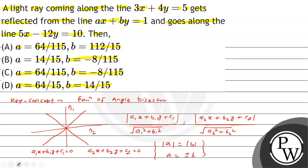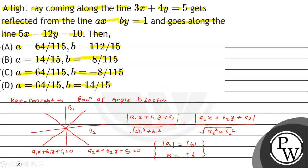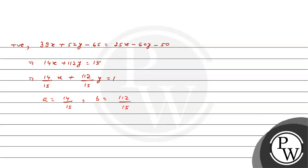We can see one option: a equal 14 by 15, b equal 112 by 15. But it's not matching. Now we will take negative sign.